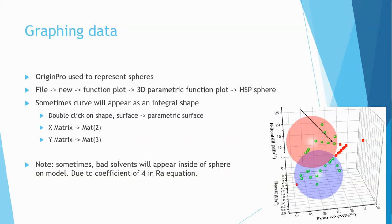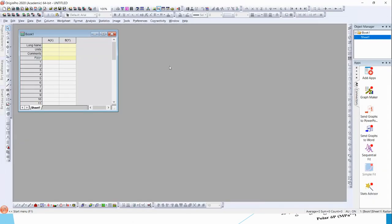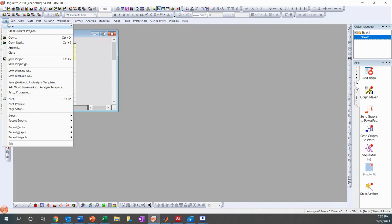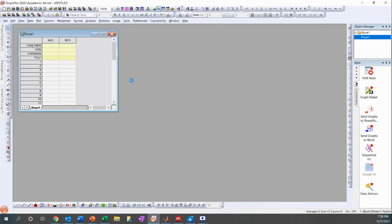Finally, graphing the spheres is also a very important part of showing results to the public. So for this study, we used OriginPro to graph the spheres. And I'll show you how to graph the spheres right now. So pull up your OriginPro app. This is just started for me. And then you click File, New, Function Plot, and 3D Parametric Function Plot.